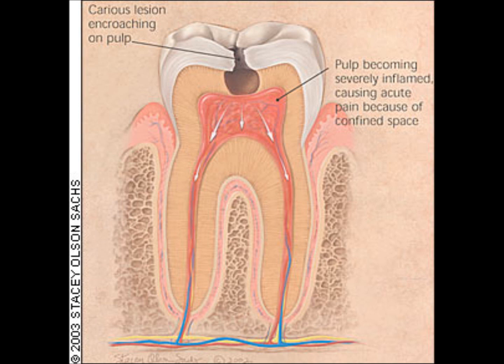In the acute symptomatic irreversible pulpitis, in the early stage, we can see the terminology of 'hot tooth.' The hot tooth is a condition where pain is caused by heat and relieved by cold. Heat causes vasodilatation of vessels and expansion of fluids, which increases the pressure. Cold causes vasoconstriction and contraction of fluids, therefore it decreases the pressure and decreases pain.